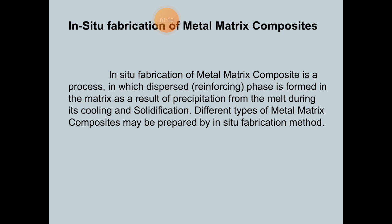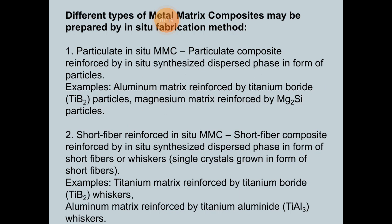Different types of metal matrix composites may be prepared by the in-situ fabrication method. The first type is particulate in-situ MMCs — composites reinforced by an in-situ synthesized dispersed phase in the form of particles. Examples include aluminum matrix reinforced by titanium boride (TiB2) particles, and magnesium matrix reinforced by Mg2Si particles.